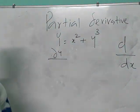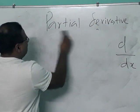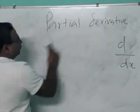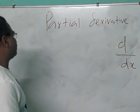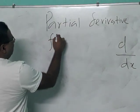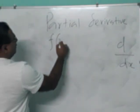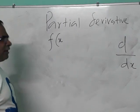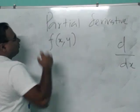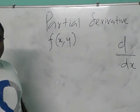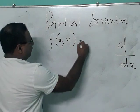So, partial derivatives — you have a function. If it is a function of one variable, we write it as f(x). If it is a function of two variables, we write it as f(x, y). This is a function of two variables. Let it be x squared plus y squared.